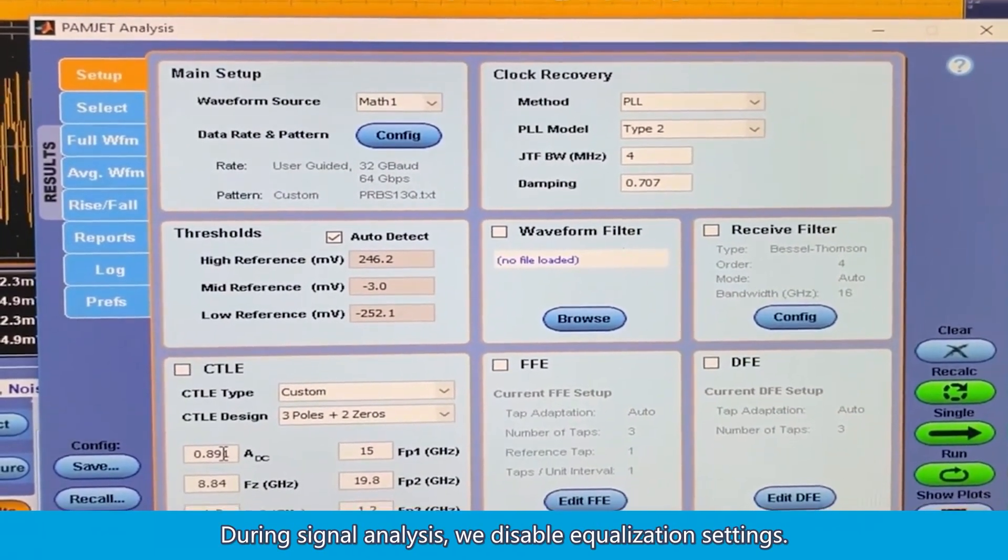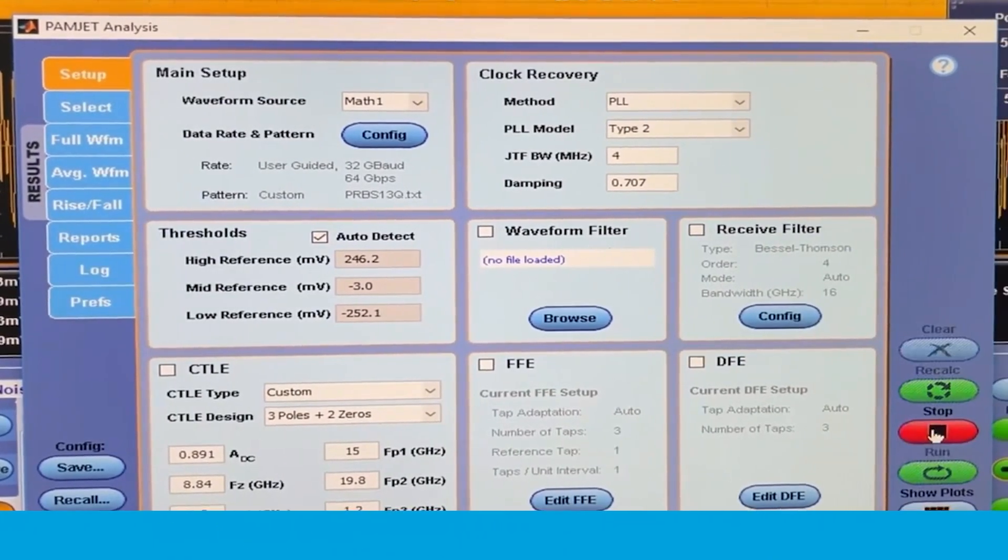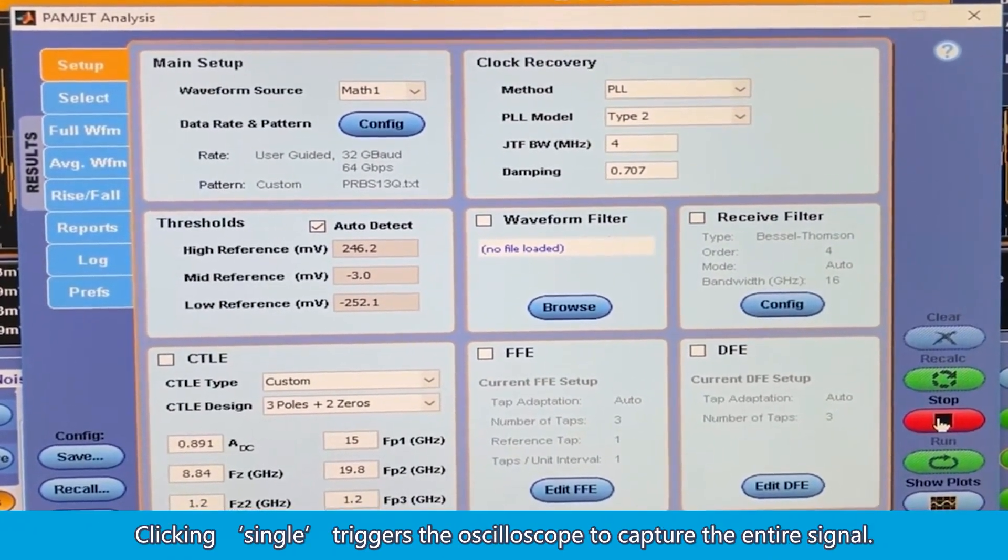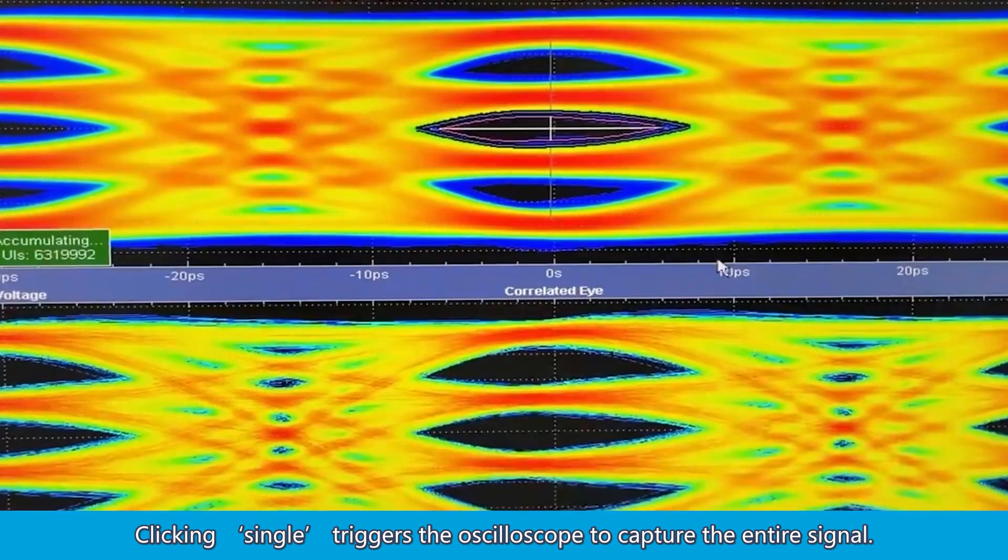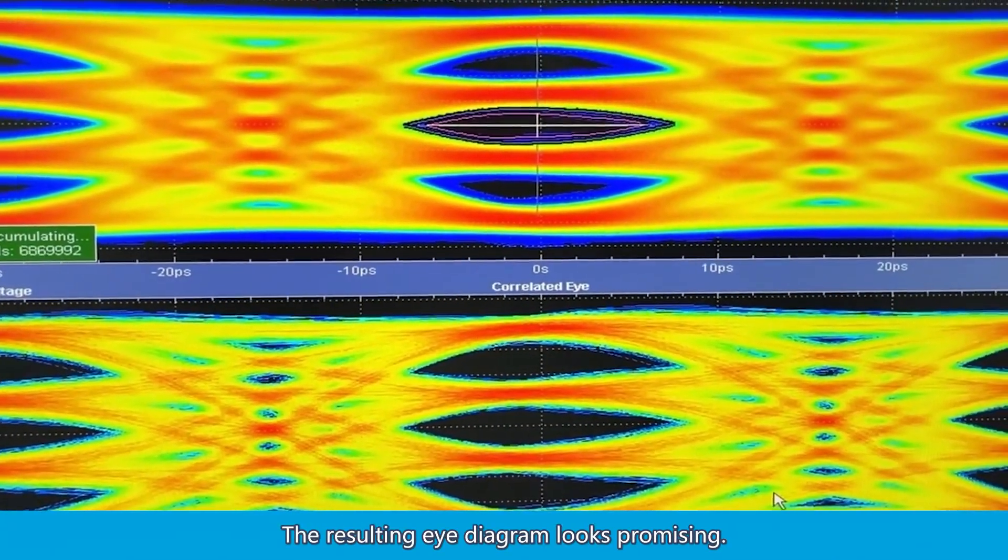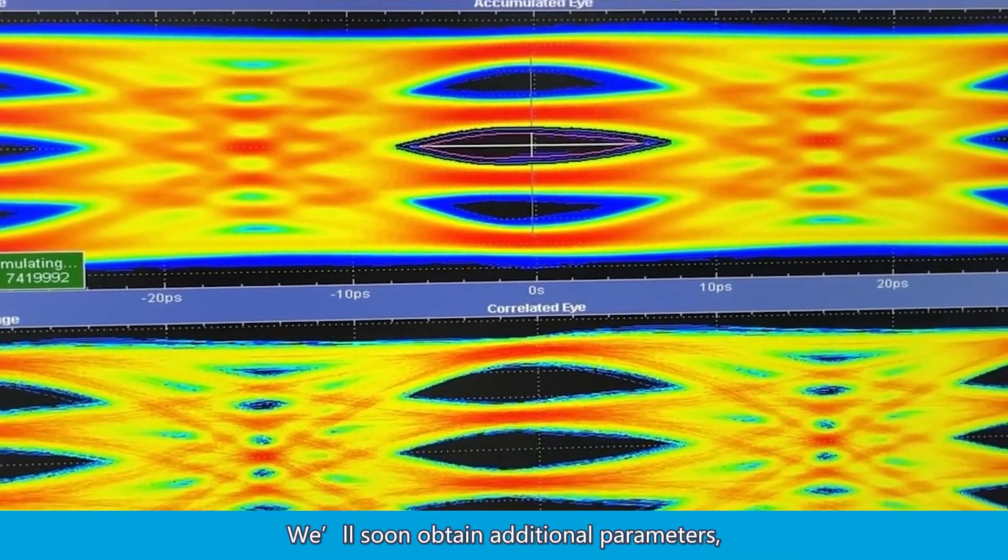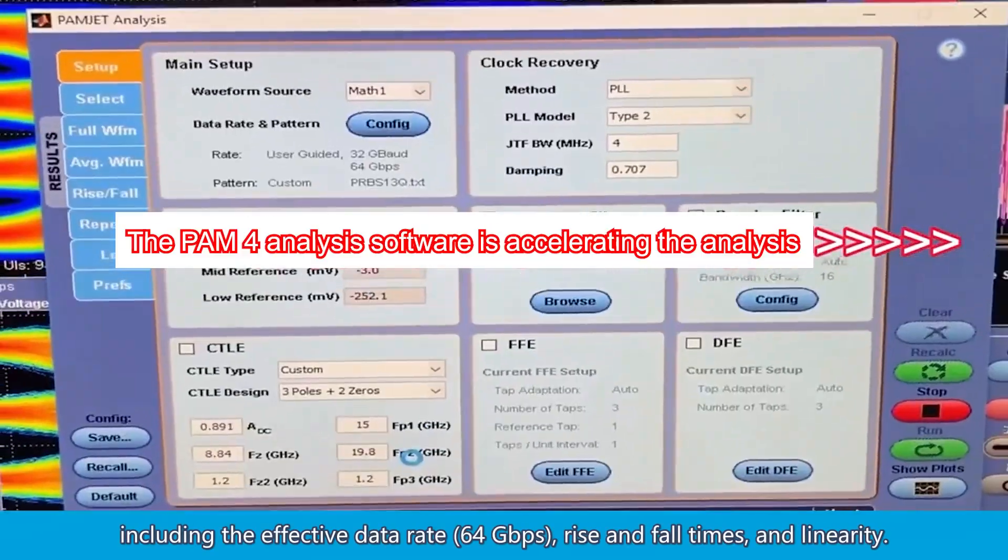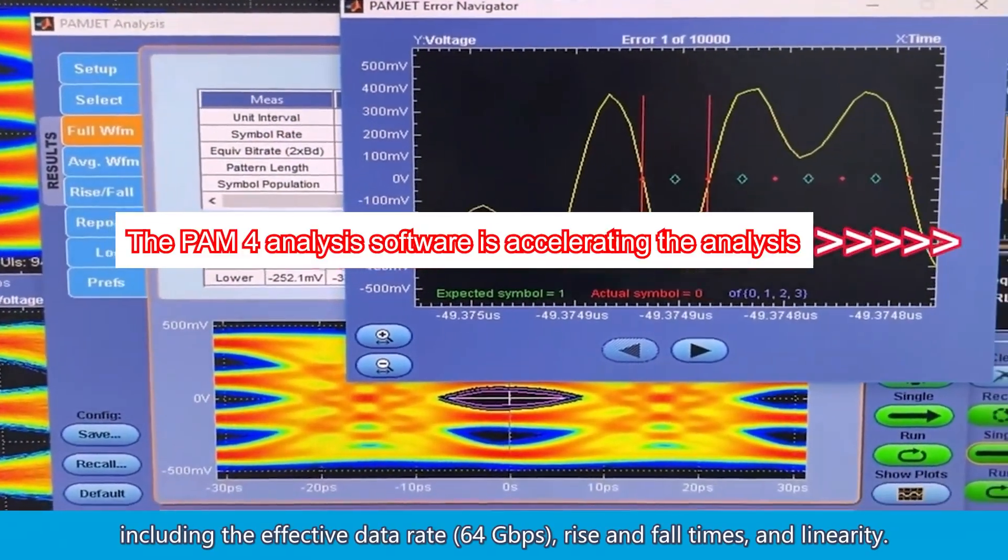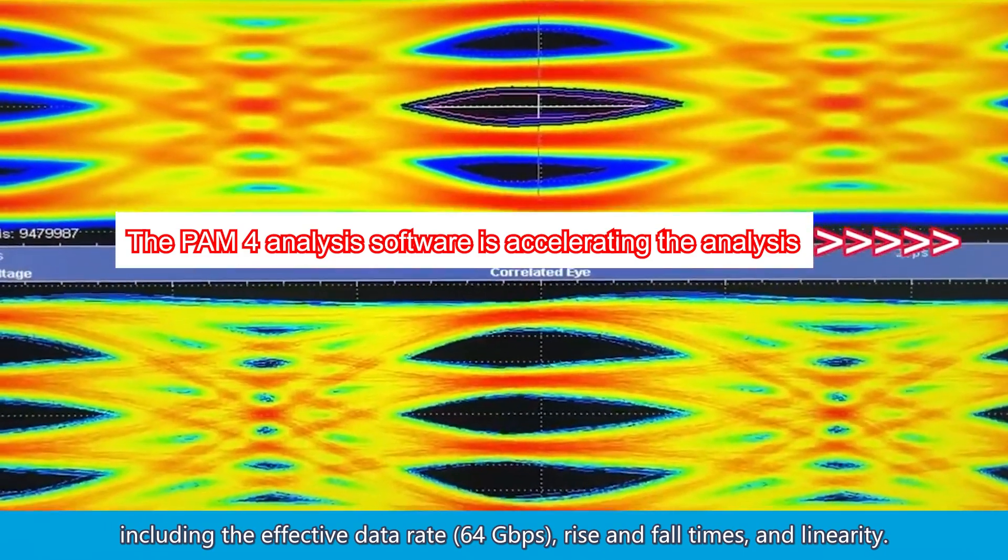During signal analysis, we disable equalization settings. Clicking single triggers the oscilloscope to capture the entire signal. The resulting eye diagram looks promising. We'll soon obtain additional parameters, including the effective data rate, 64 gigabits per second, rise and fall times, and linearity.